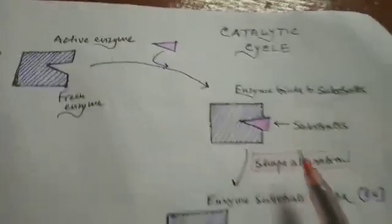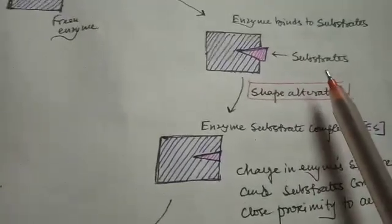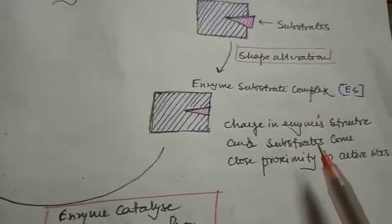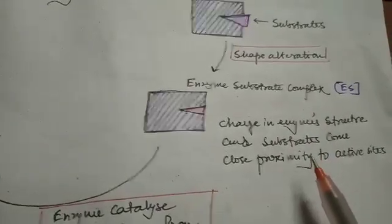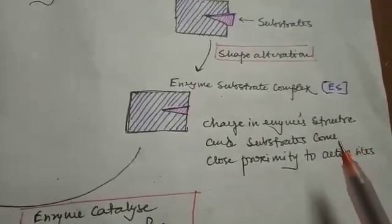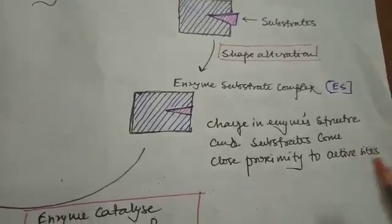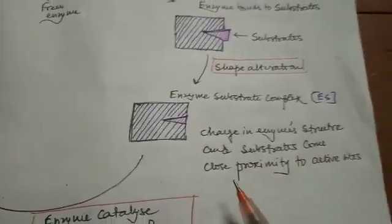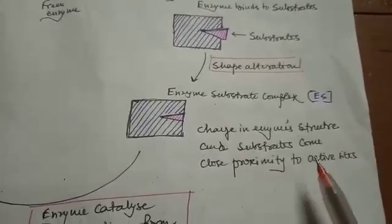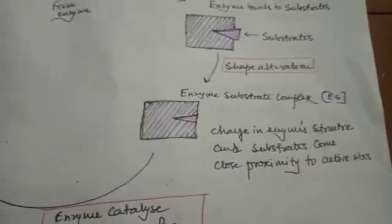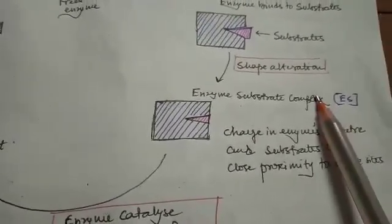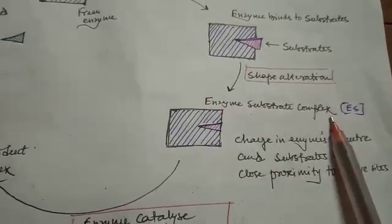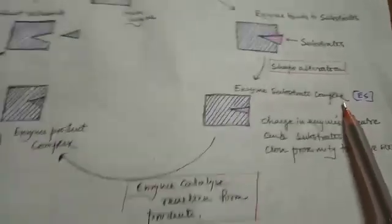So at first there is a free enzyme, then the substrate binds to the enzyme. As a result of the binding of the substrate to the enzyme, there is a shape alteration. As a result of that shape alteration, the enzyme structure changes and the substrate comes into very close proximity to the active site of the particular enzyme. Now they form a structure known as the enzyme-substrate complex.